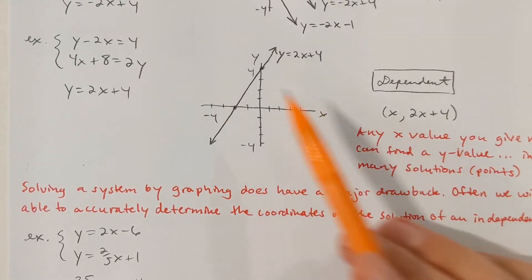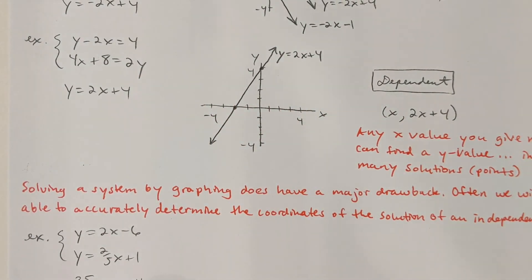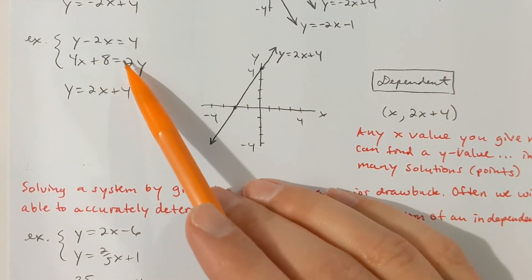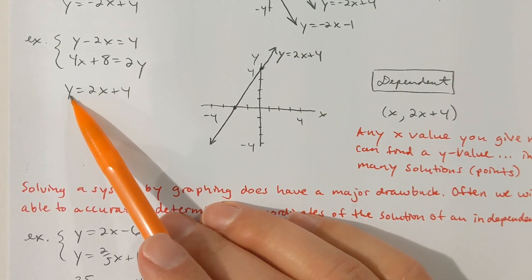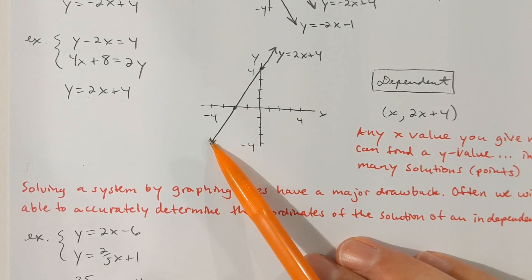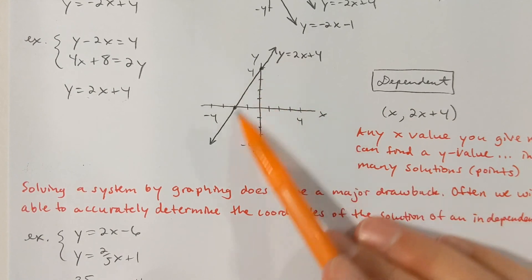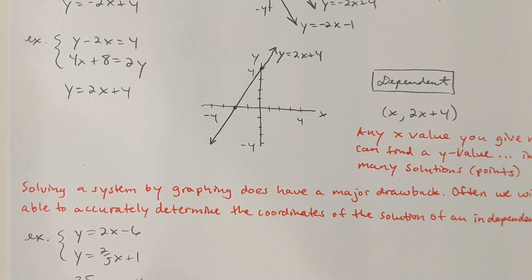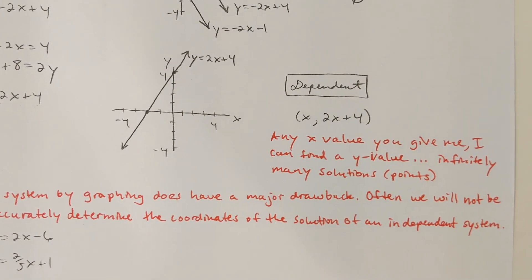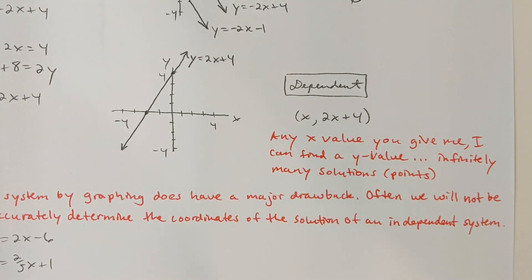Here's another example. I've got another system of equations. If I were to solve both of these equations for y, I would get y equal 2x plus 4 on both. So I draw that line y equal 2x plus 4 — and it's the same thing. I'm looking at a line on top of a line. My answer is where the lines intersect, and if I have a line on top of a line, those two lines will intersect infinitely often. So there are infinitely many solutions to this system — we call that a dependent system.